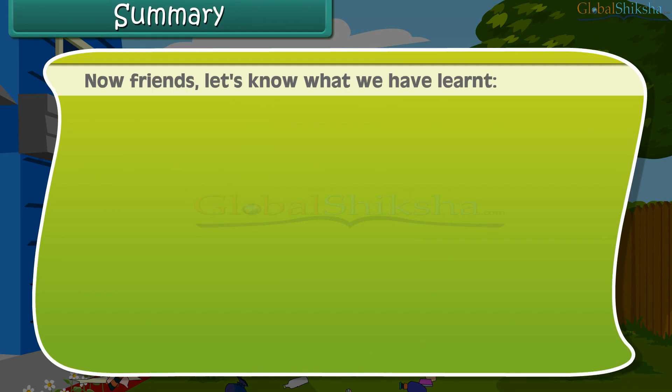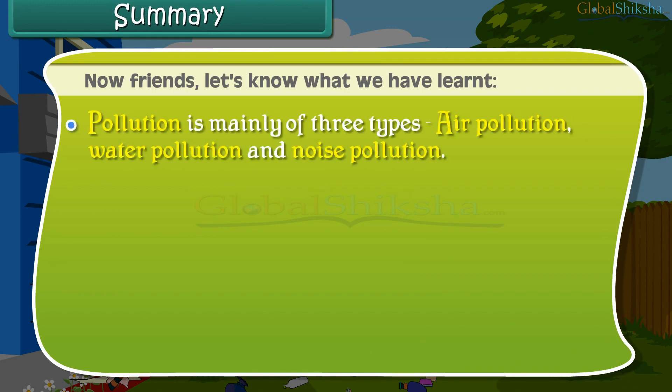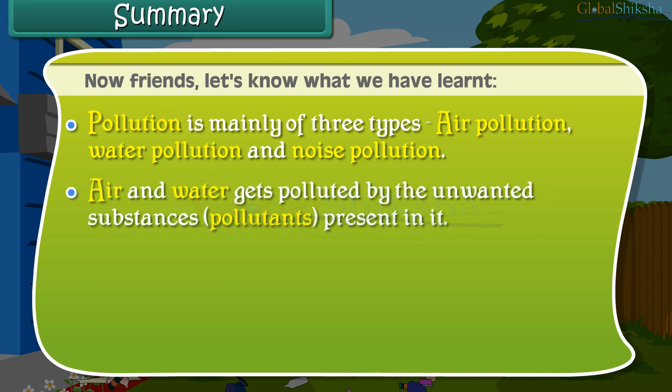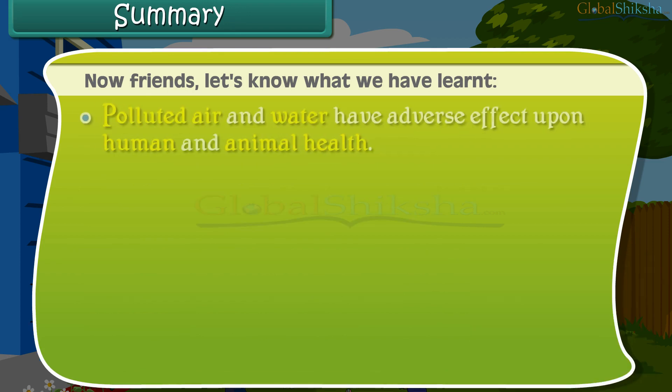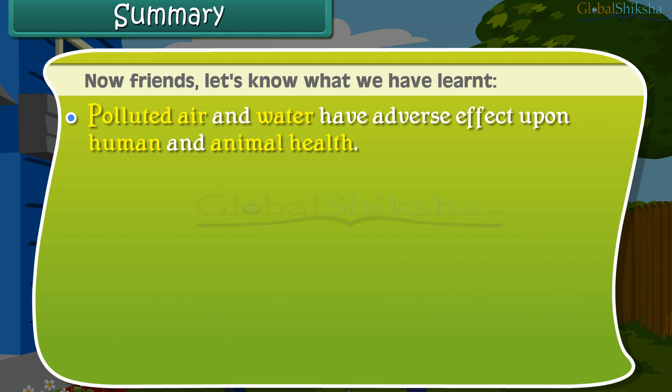Now friends, let's recap what we have learned. Pollution is mainly of three types: air pollution, water pollution, and noise pollution. Air and water get polluted by unwanted substances called pollutants. Sewage from homes and wastes from factories are the main sources of water pollution. Polluted air and water have an adverse effect upon human and animal health.